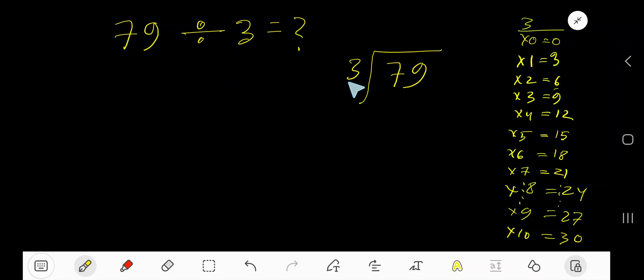79 divided by 3. Here 3 is a divisor, so we need the multiplication table of 3. 3 times 0 is 0, 3 times 1 is 3, 3 times 2 is 6, 3 times 3 is 9, 3 times 4 is 12, 3 times 5 is 15, 3 times 6 is 18, 3 times 7 is 21.